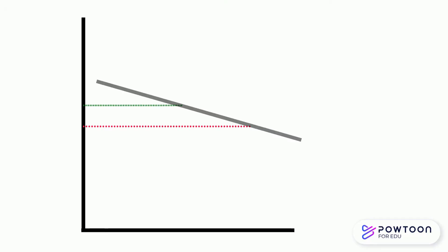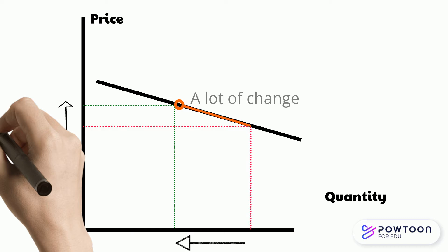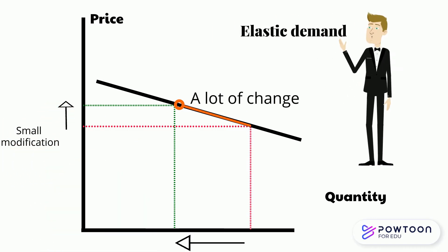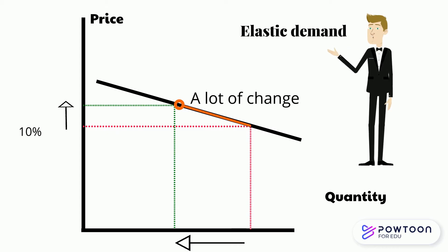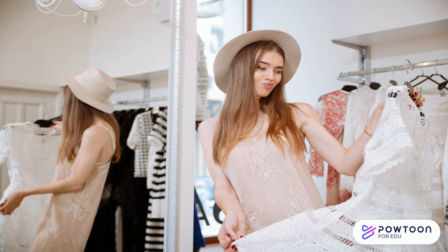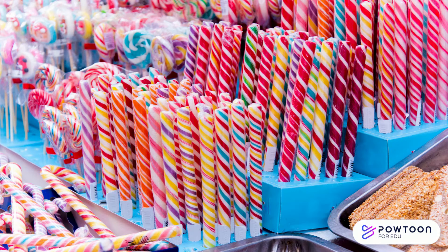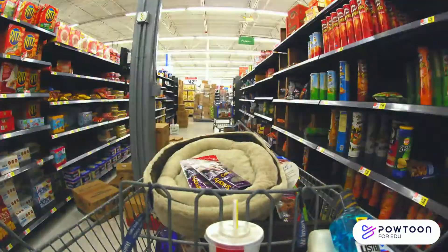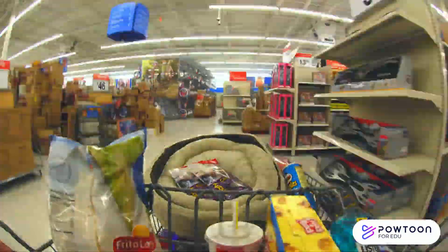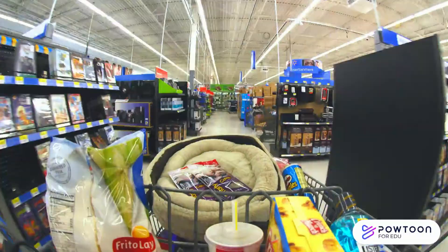In economic terms, the demand for a good is elastic when the quantity demanded of that good changes a lot when there is a small change in the price of that good. For example, if the price of a good increases by 10% and the quantity demanded decreases by 20%. Common examples of products with high elasticity are luxury items and consumer discretionary items, such as a brand of cereal or candy bars. Food products are easily substituted and brand names are easily replaced by lower-priced items.